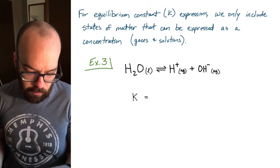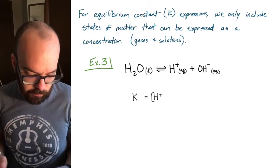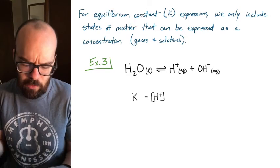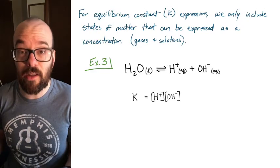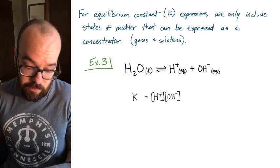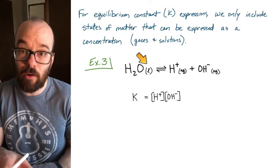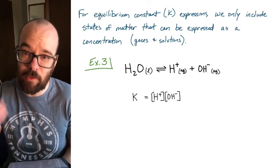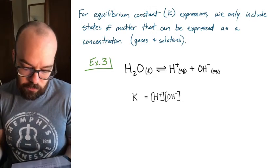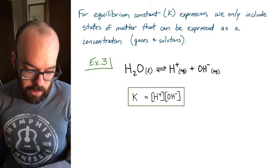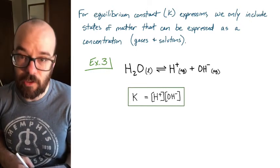Starting with the products: we have H⁺ ions, so we write the concentration of H⁺ to the power of one, since there's no coefficient, times hydroxide ions to the power of one. Divided by — well, liquid water. Because it's a pure liquid, we don't talk about it in terms of concentration, so we won't include it in our equilibrium expression. Our answer is K equals the concentration of hydrogen ions times the concentration of hydroxide ions.